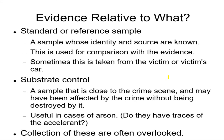Something that is often overlooked is evidence relative to things that are not evidence — they are called standard samples, reference samples, or substrate controls. These are samples whose identity and source are known. For example, if you have fiber evidence at a murder scene — say, a fiber on the dead body — you not only have to collect that as evidence, you also collect fibers from the carpet that the dead body is on. Maybe that fiber actually came from the victim's own carpet. So don't just take the sample you think is evidence; take samples from places around it so you can compare them.